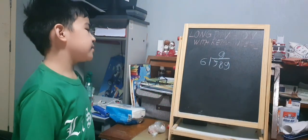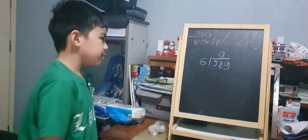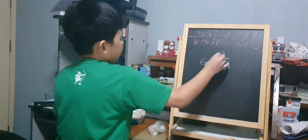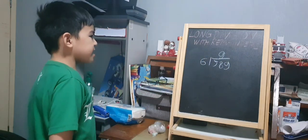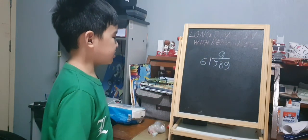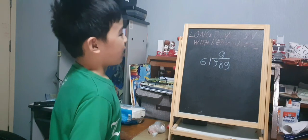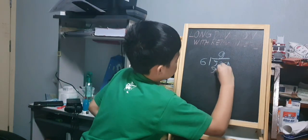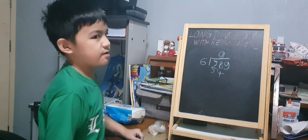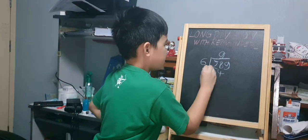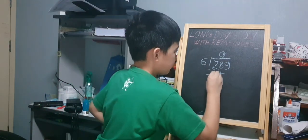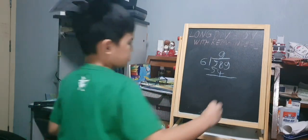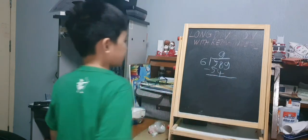The next step is to multiply. We will multiply 9 and 6. 9 times 6 is 54, so we will put 54 under 58. Then we will subtract 58 and 54. The answer to that is 4, so we will put it there.